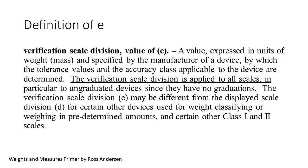Here is the current Handbook 44 definition of E. It specifically mentions ungraduated instruments' balances because they have no divisions D. They don't indicate weight. They indicate a balanced condition. This confirms that E is not related to the instrument resolution in D, but to the actual weight used in verification, hence the verification scale division or interval.